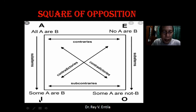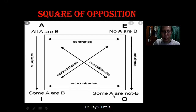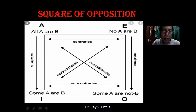I and O are subcontraries — 'sub' meaning below, because they are at the bottom of the square. For example: 'Some Lasallian students are intelligent' — that's particular affirmative. And the particular negative responds: 'Some Lasallian students are not intelligent.' So subcontrary — the left is affirmative, the right is negative.